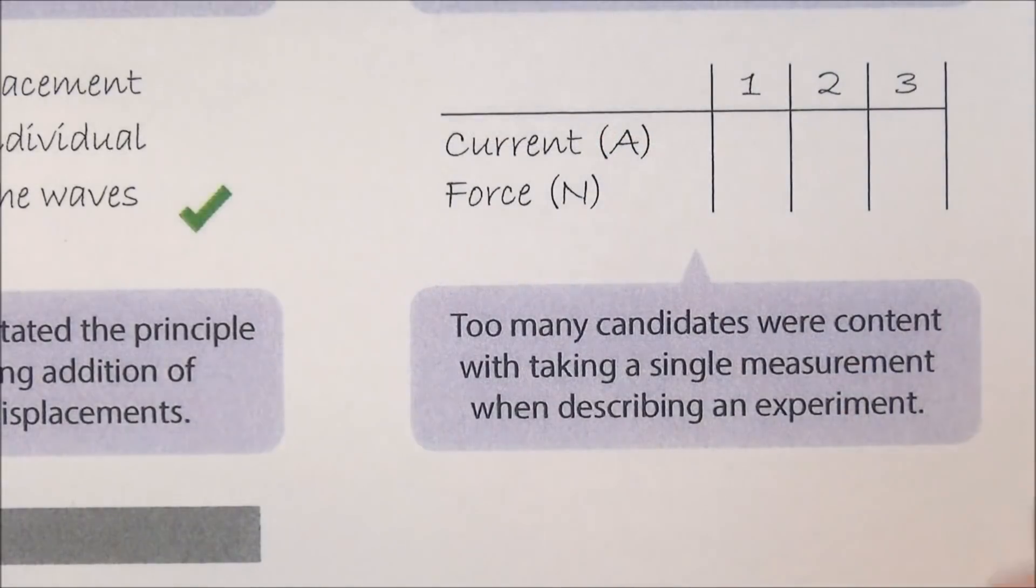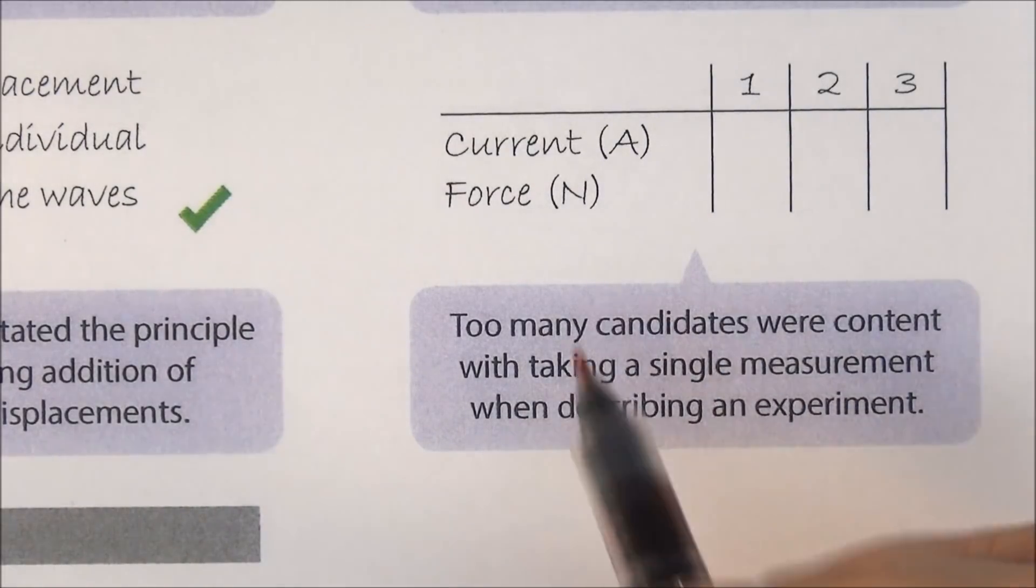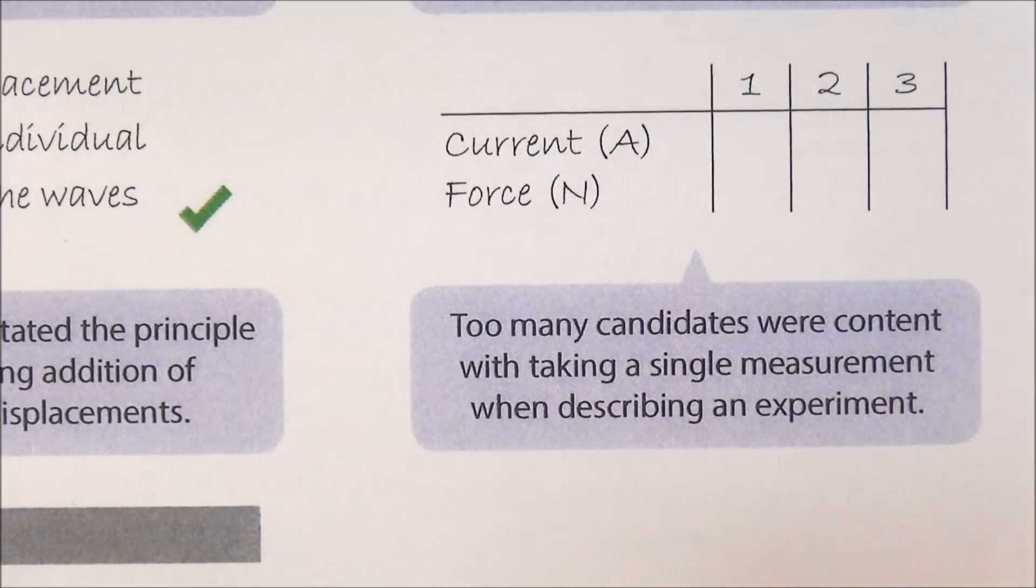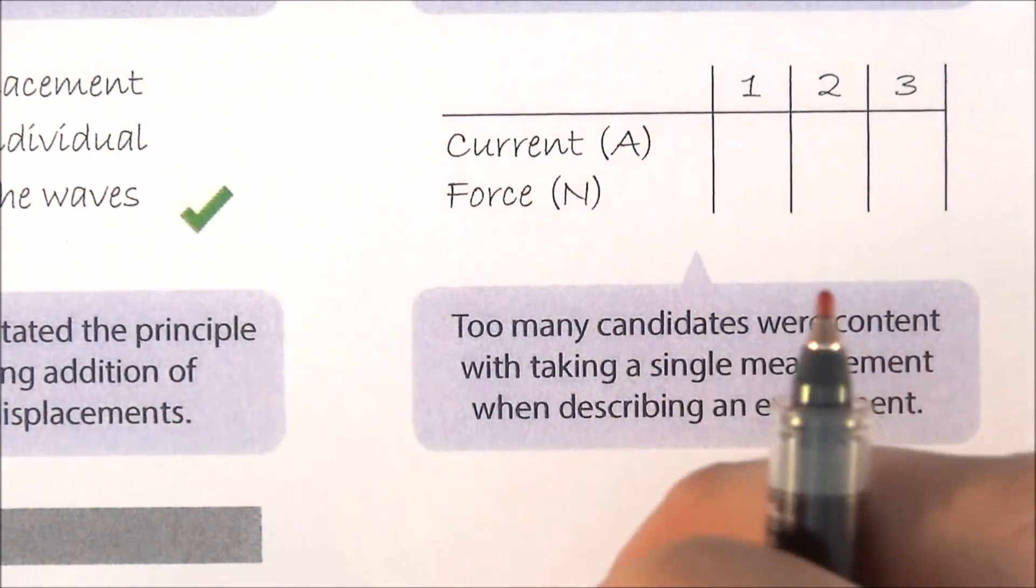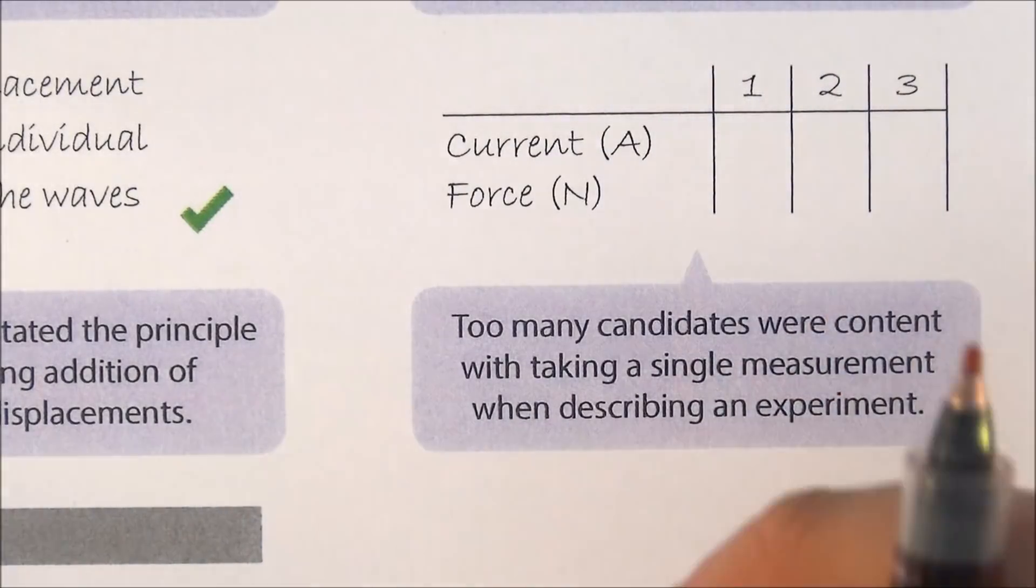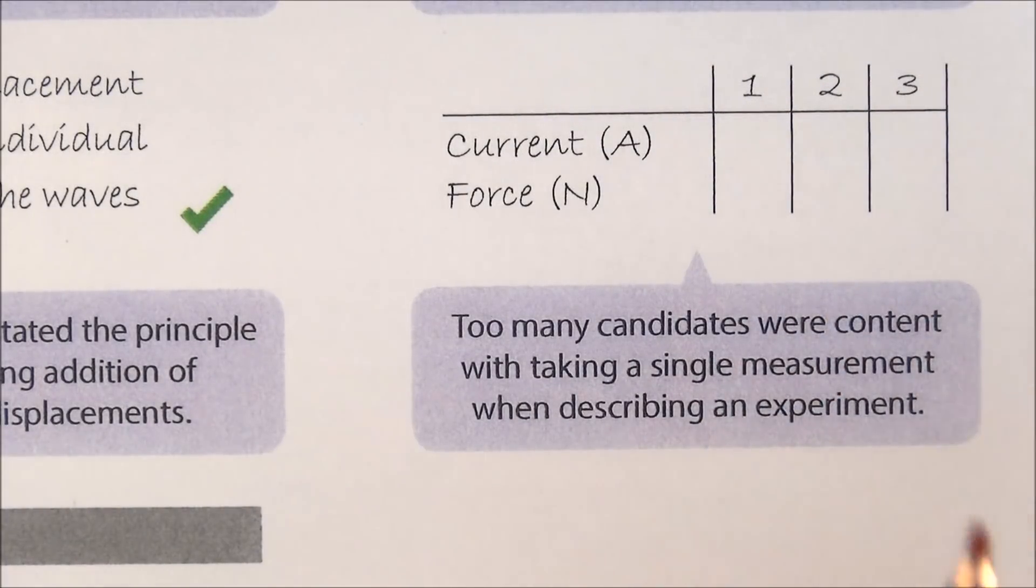Number nine, and this relates to the way that you describe experiments. We know this - my year seven classes know this. When you're describing an experiment, you don't just take a single measurement, you take repeated readings so you can work out an average and identify any anomalies. Make sure that you state that when you're writing, and that gets you just that one little extra mark that might be the difference between that grade that you're after and the one that you're just missing out on.